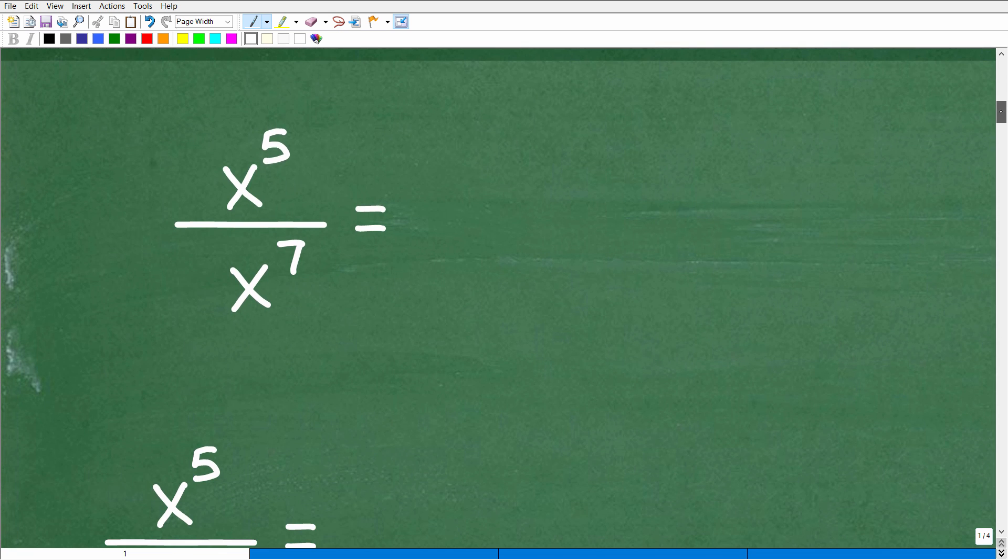Okay, so I'm going to explain this problem using three models. The first is, let's just understand what's going on here. So we have x to the fifth. What does that mean? Well, in algebra, this means we have x being multiplied by itself five times. So this is going to be x times x times x times x times x. One, two, three, four, five. That's all x to the fifth means.